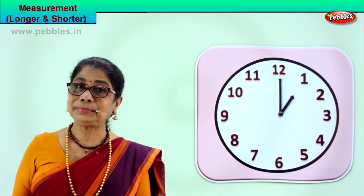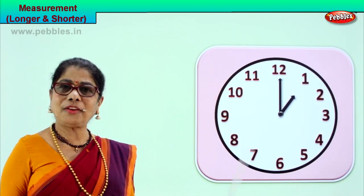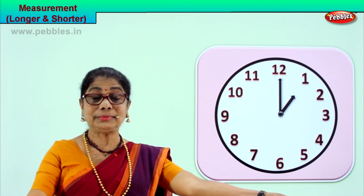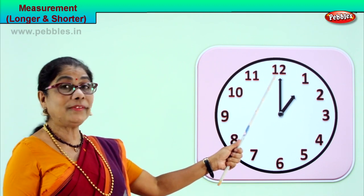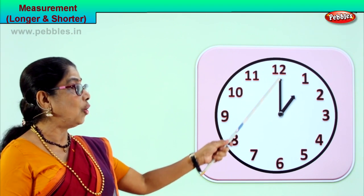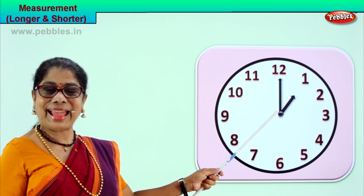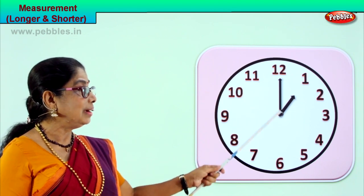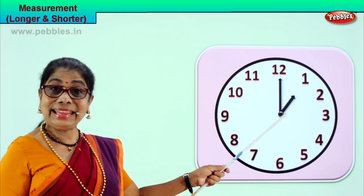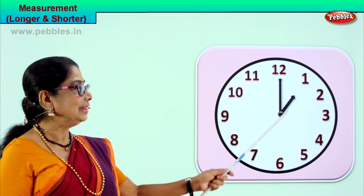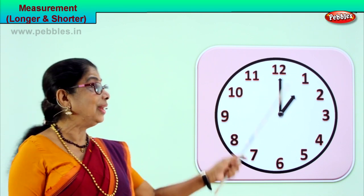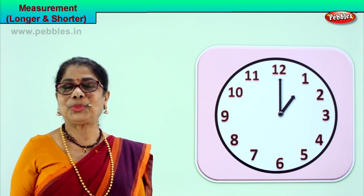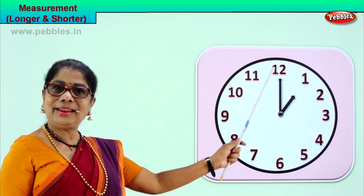Shall we look at another picture? Look at the clock face very carefully. The clock has two hands — a long hand and a short hand. The longer hand is the minute hand. The shorter hand tells the hour. Longer hand is the minutes hand, shorter hand is the hour hand. The minutes hand is longer than the hour hand, which is shorter. What are we comparing? We are comparing the two hands — longer, shorter.